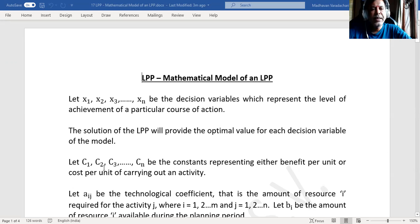Let c1, c2, c3, and so on up to cn be the constants representing either benefit per unit or cost per unit of carrying out an activity.